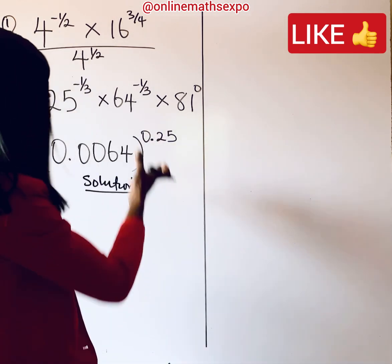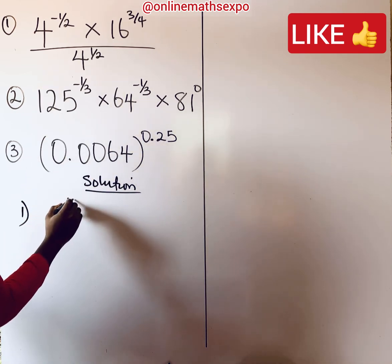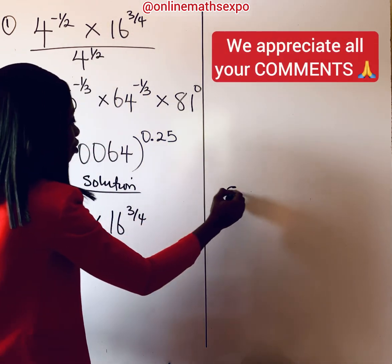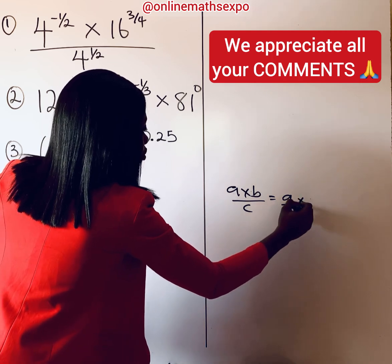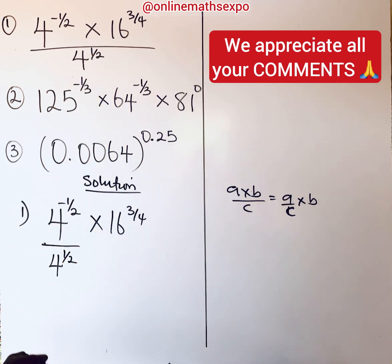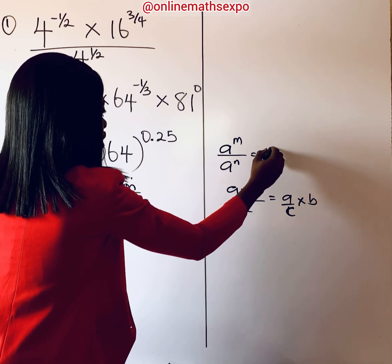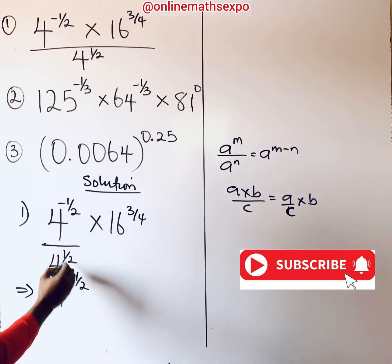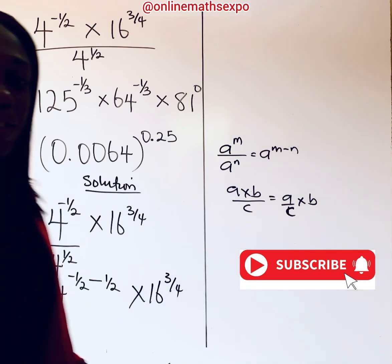Remember, if you have ideas on any of them, drop your answer in the comments. For the first problem, we have 4 to the power of negative half, multiplying 16 to the power of 3 over 4, being divided. Remember: if you have A multiplied by C divided, it simply means A over C multiplied by B — it gives you the same result. So here we can just divide this by 4 to the power of half. Remember your rule of exponents: the division sign turns to subtraction. So we're going to have 4 to the power of negative half, and this will now turn to subtraction — subtract half minus half — then multiply by 16 to the power of 3 over 4.